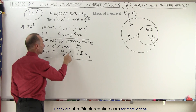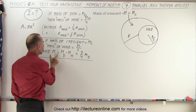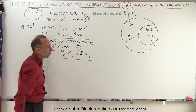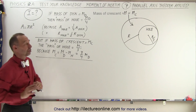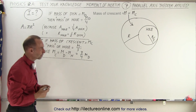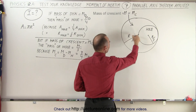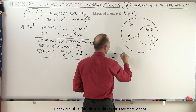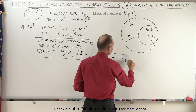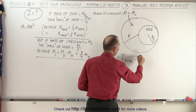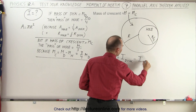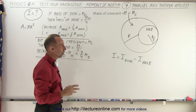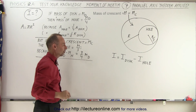If we take the total mass of the disc minus the mass of the hole, we get the mass of the crescent, and that will be three times the mass of the hole. Now we can go ahead and solve the problem. The moment of inertia equals the moment of inertia of the total solid disc minus the moment of inertia of the hole. That's how we deal with holes — when a hole is cut out, we subtract its moment of inertia.